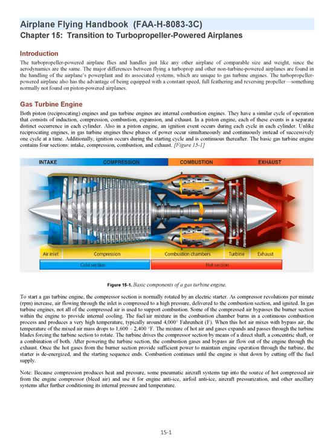After powering the turbine section, the combustion gases and bypass air flow out of the engine through the exhaust. Once the hot gases from the burner section provide sufficient power to maintain engine operation through the turbine, the starter is de-energized and the starting sequence ends. Combustion continues until the engine is shut down by cutting off the fuel supply. Note: because compression produces heat and pressure, some pneumatic aircraft systems tap into the source of hot compressed air from the engine compressor — bleed air — and use it for engine anti-ice, airfoil anti-ice, aircraft pressurization, and other ancillary systems after further conditioning its internal pressure and temperature.